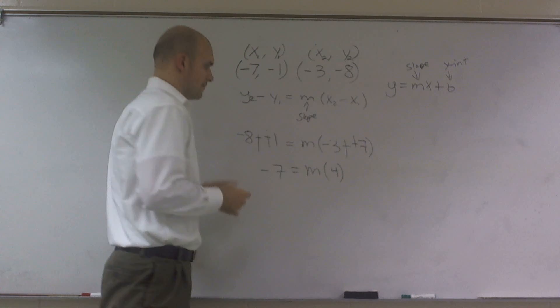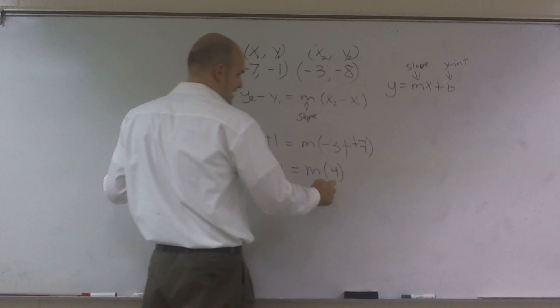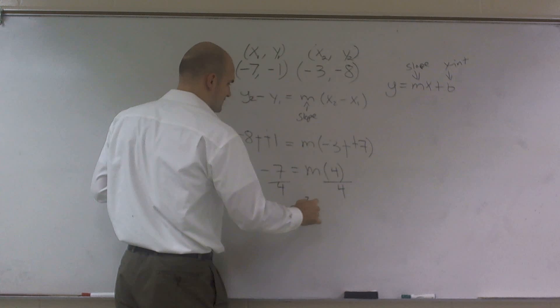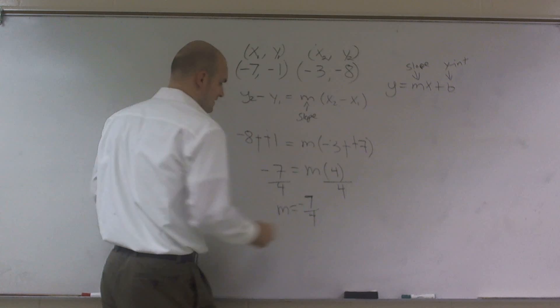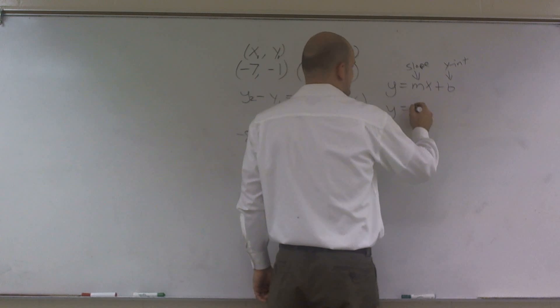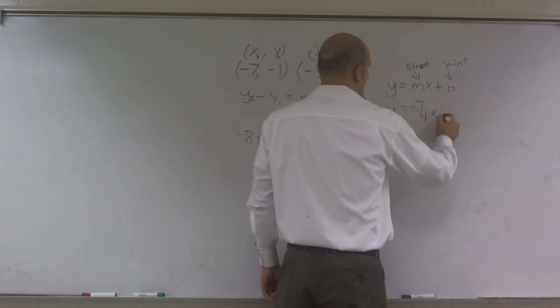These double negatives gives me a positive 4. All right? Then what I can do is now I can divide by 4. So therefore, I have m equals a negative 7 fourths. OK?